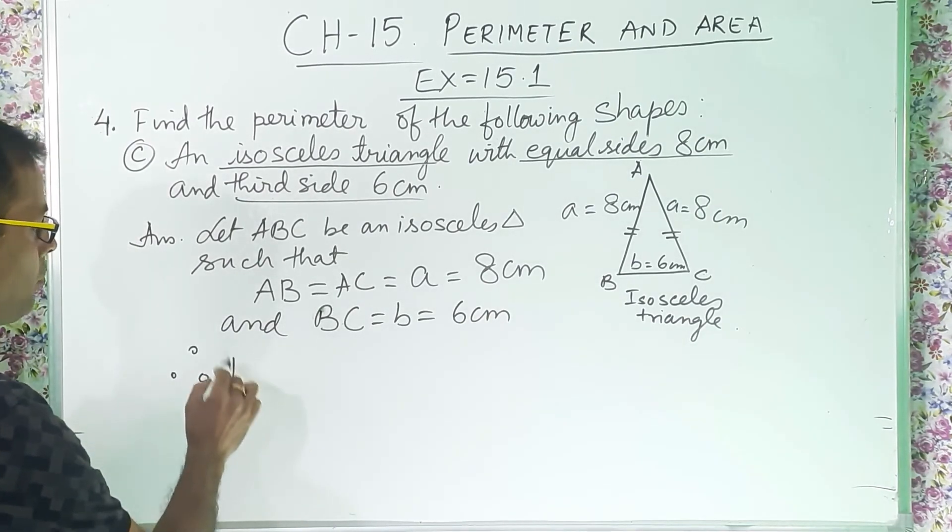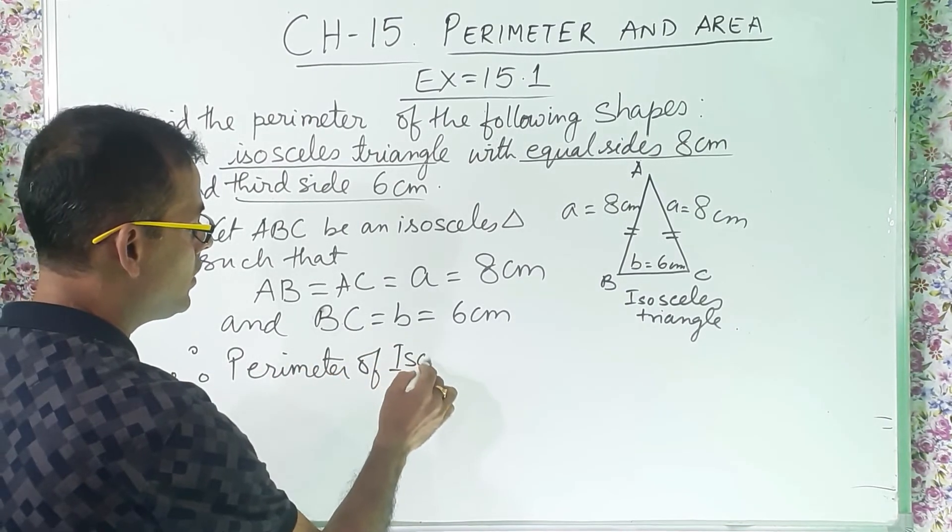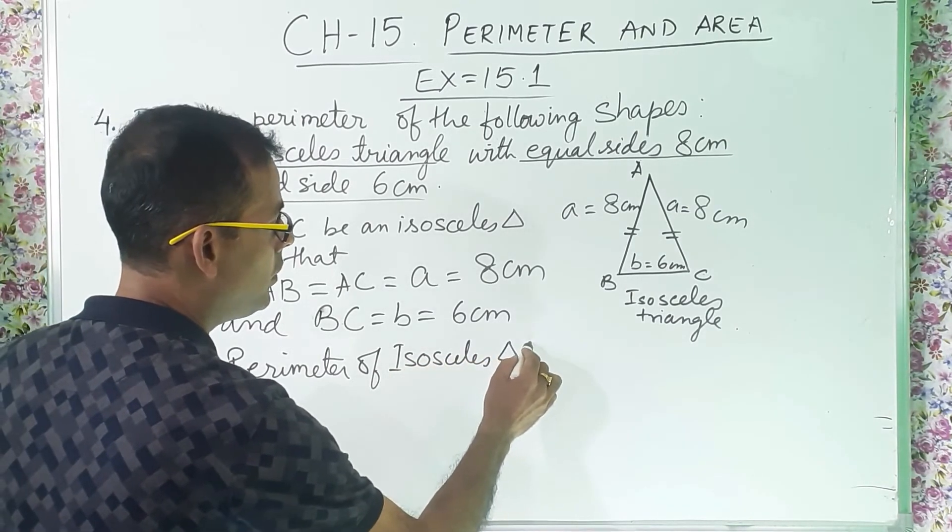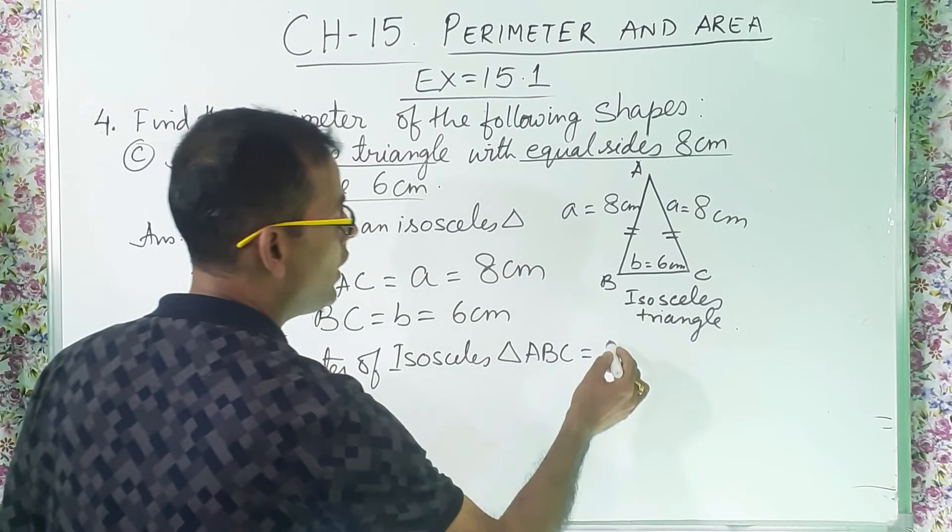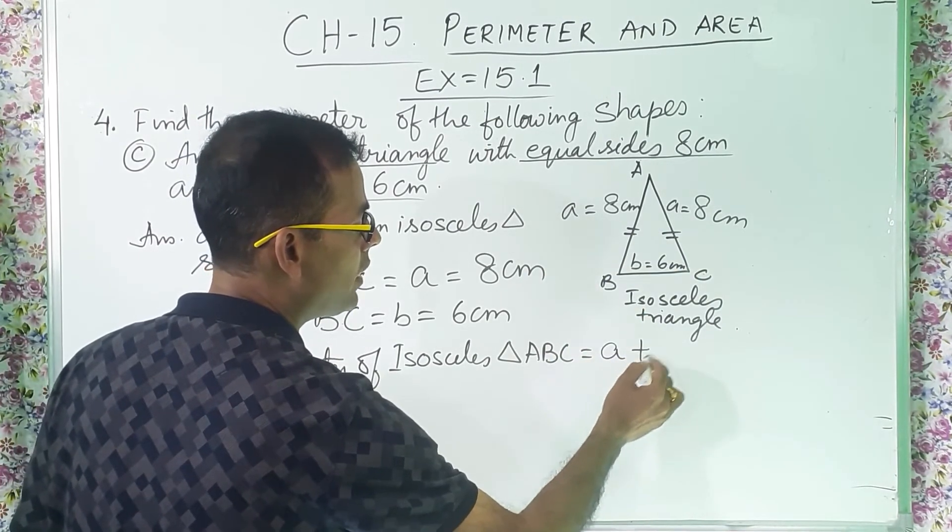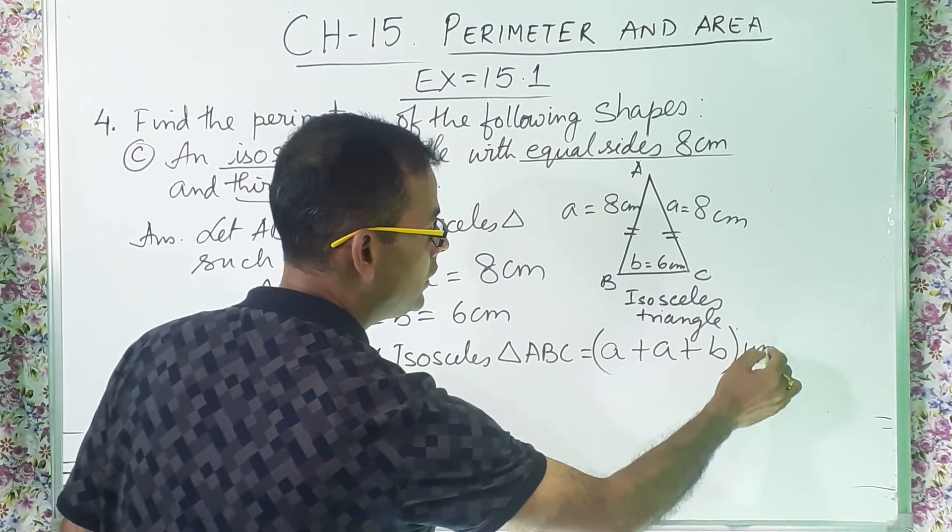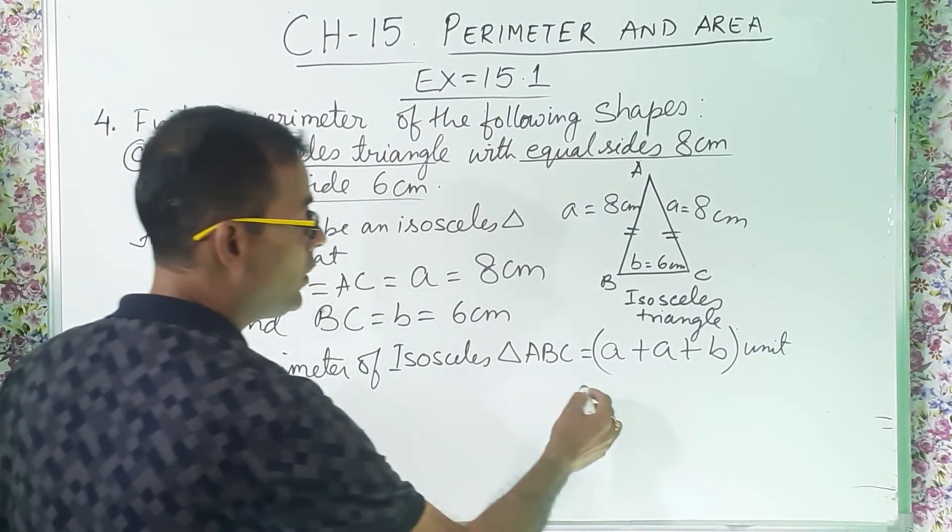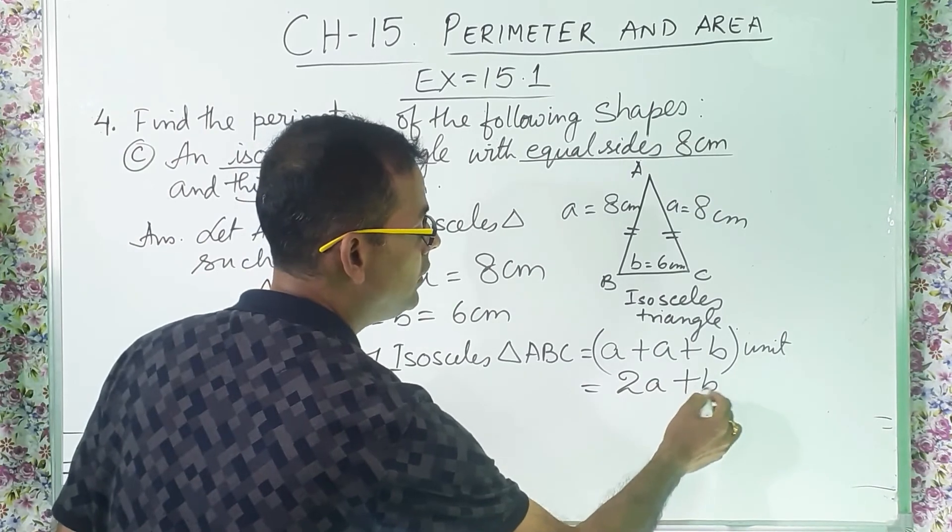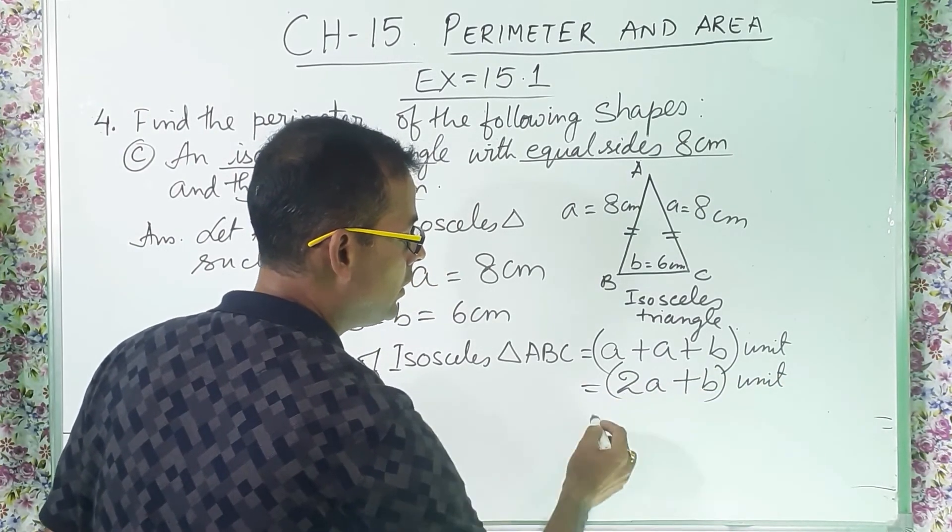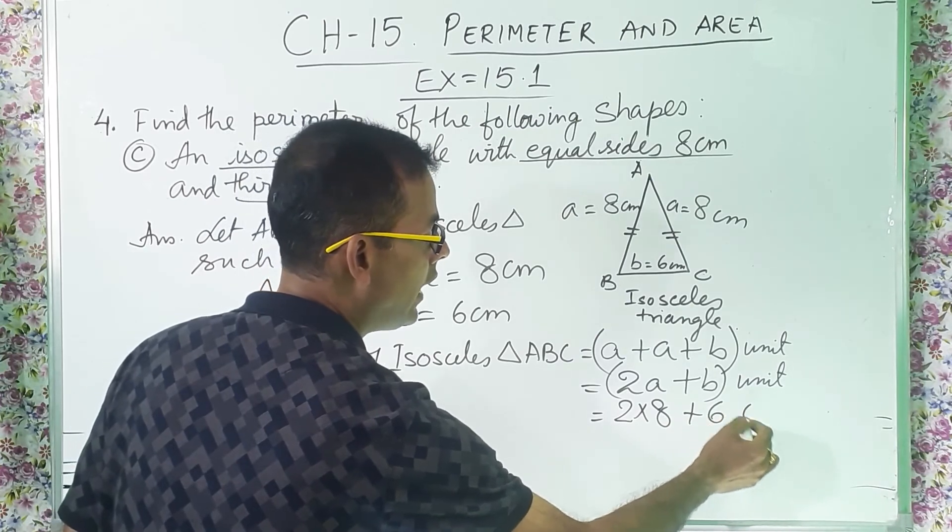Now therefore, perimeter of isosceles triangle ABC equal to. So how many sides are there? Three total. So two sides are equal. So what I can write? A plus a plus small b, like this. And then unit.